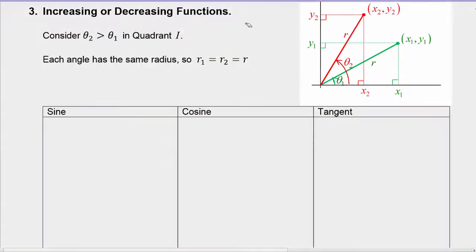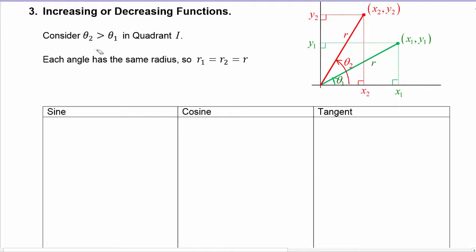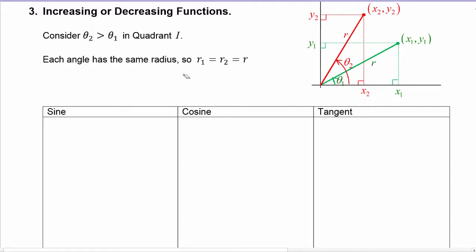To do that we need to analyze this diagram. We're going to have two angles: theta two is clearly greater than theta one. They're both in quadrant one and each angle has the same radius, so the radius of angle one equals the radius of angle two. To simplify things, we're going to call each radius r.